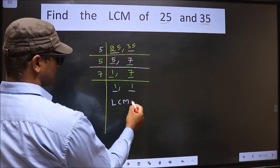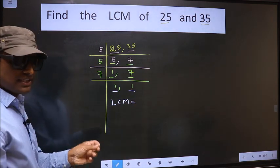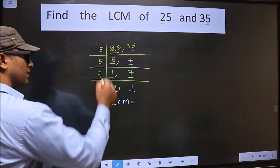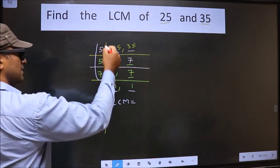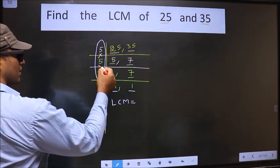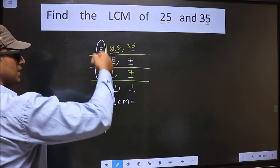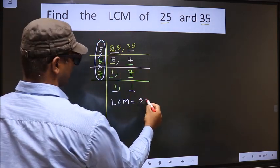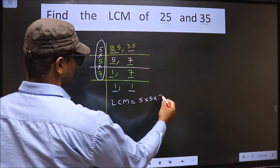So our LCM is the product of these numbers. That is 5 times 5 times 7.